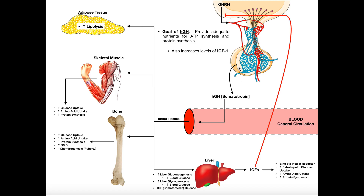From the anterior pituitary gland, growth hormone is released into the blood, into the general circulation, where it travels to target tissues. We're going to see that it has effects on tissues like adipose tissue, skeletal muscle, bone, and the liver. But before we get into all these specific functions, I want to go over the major goal of growth hormone, because this major goal is really going to dictate all the specific functions — they all sort of come back to this.